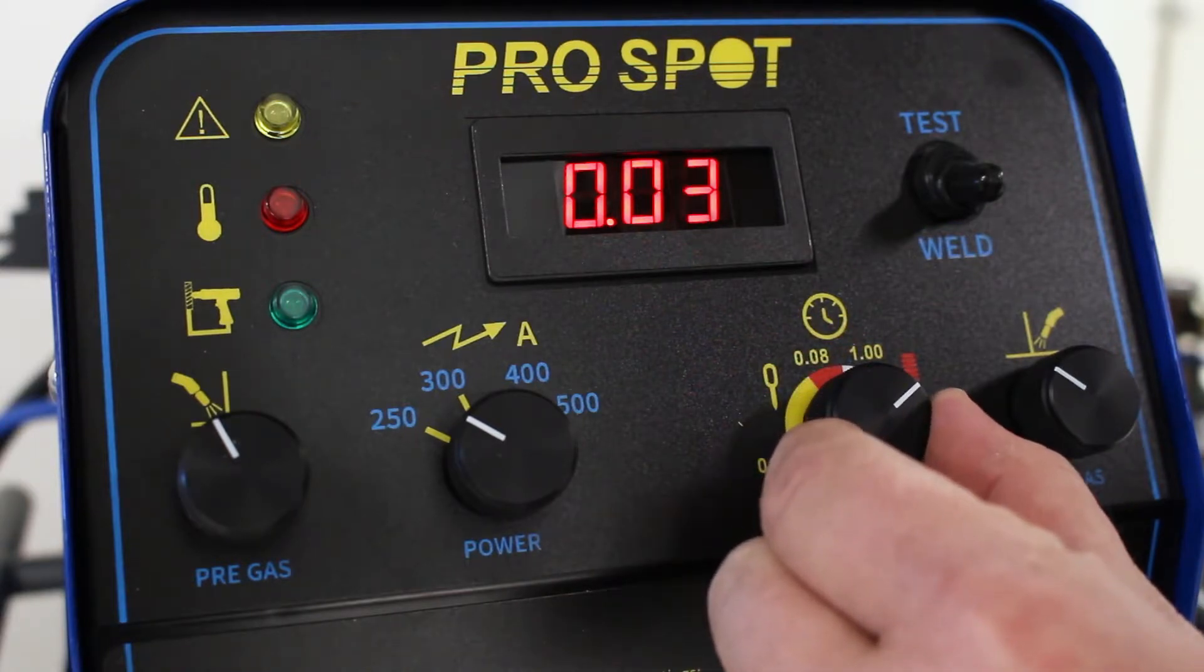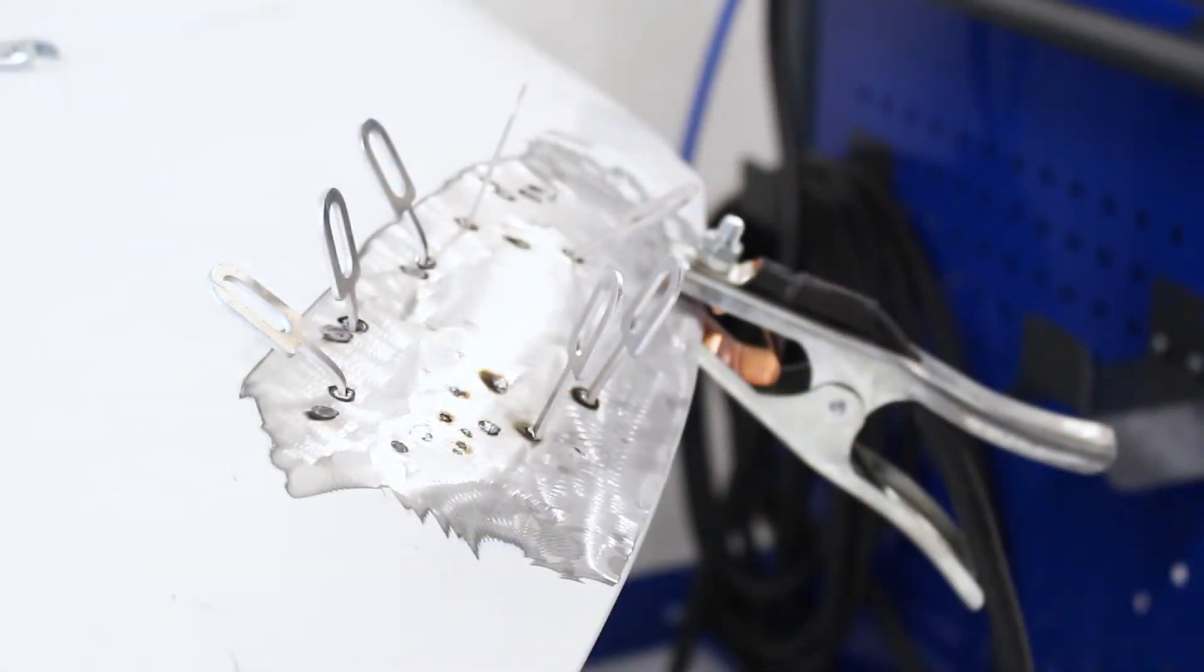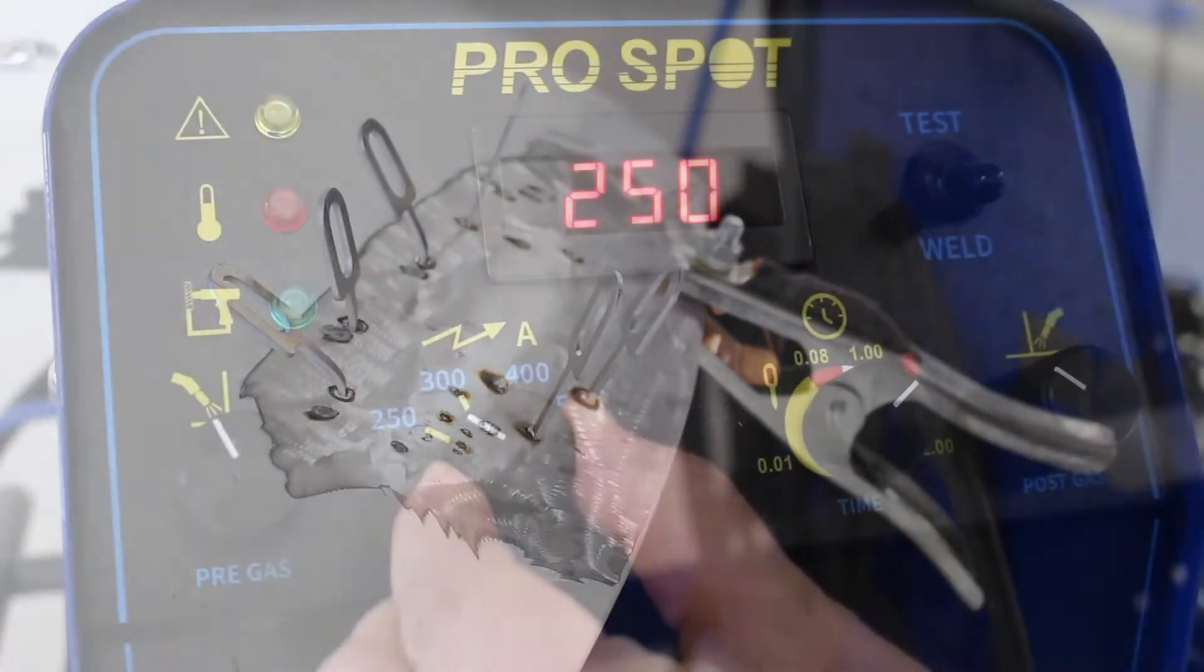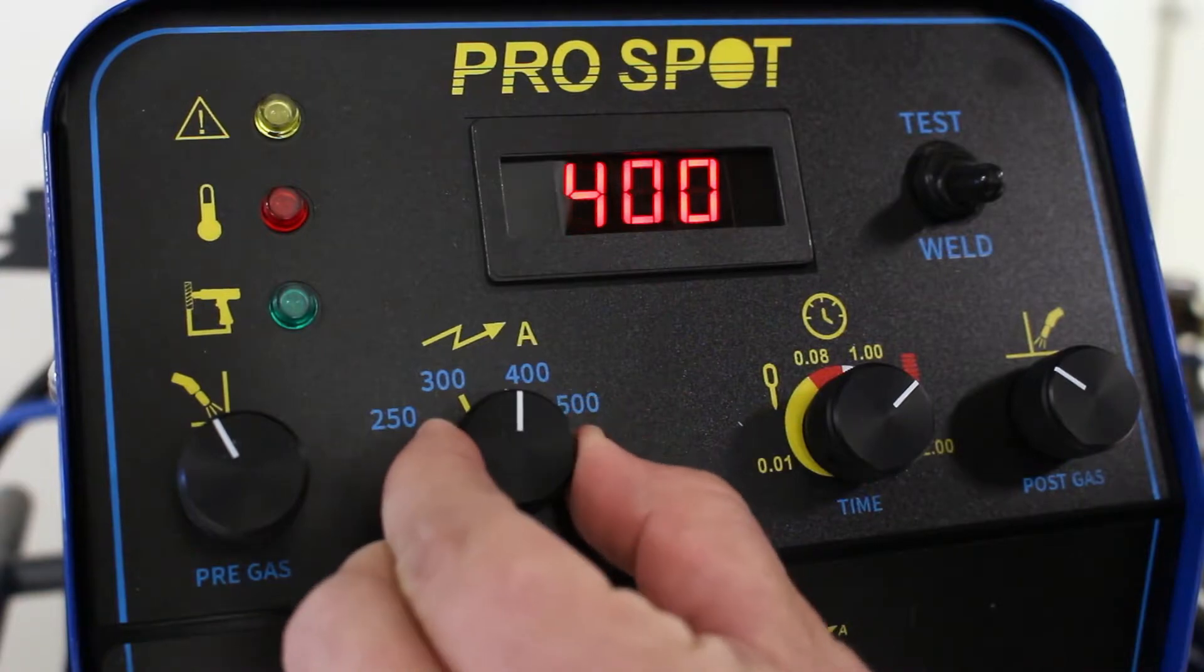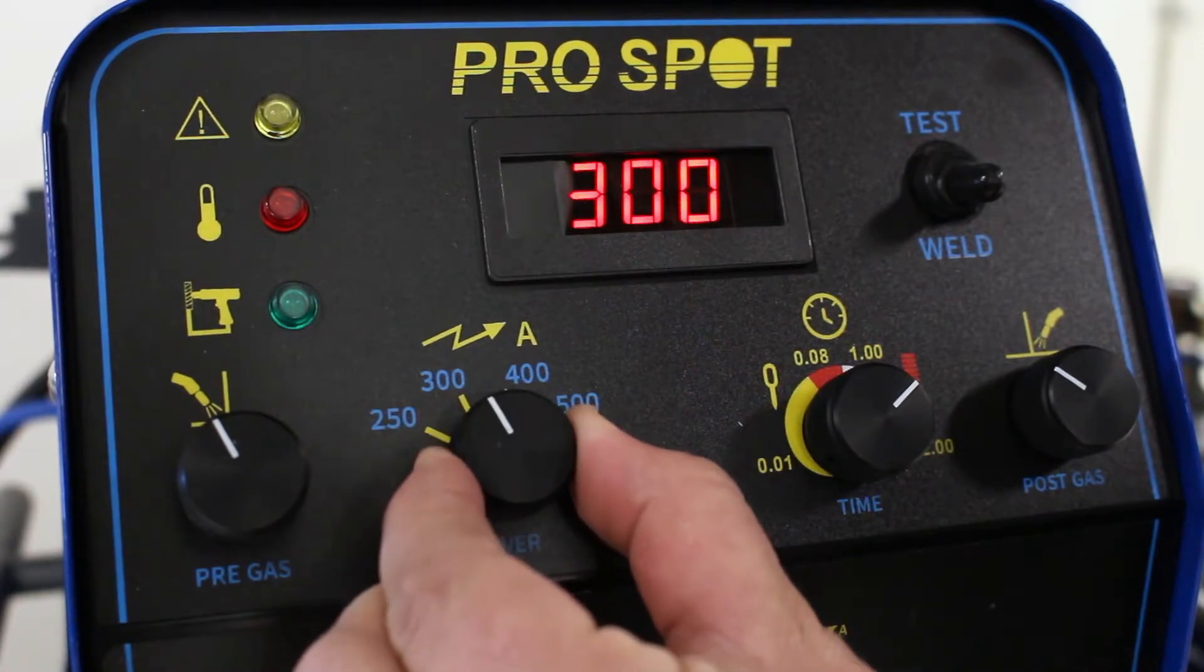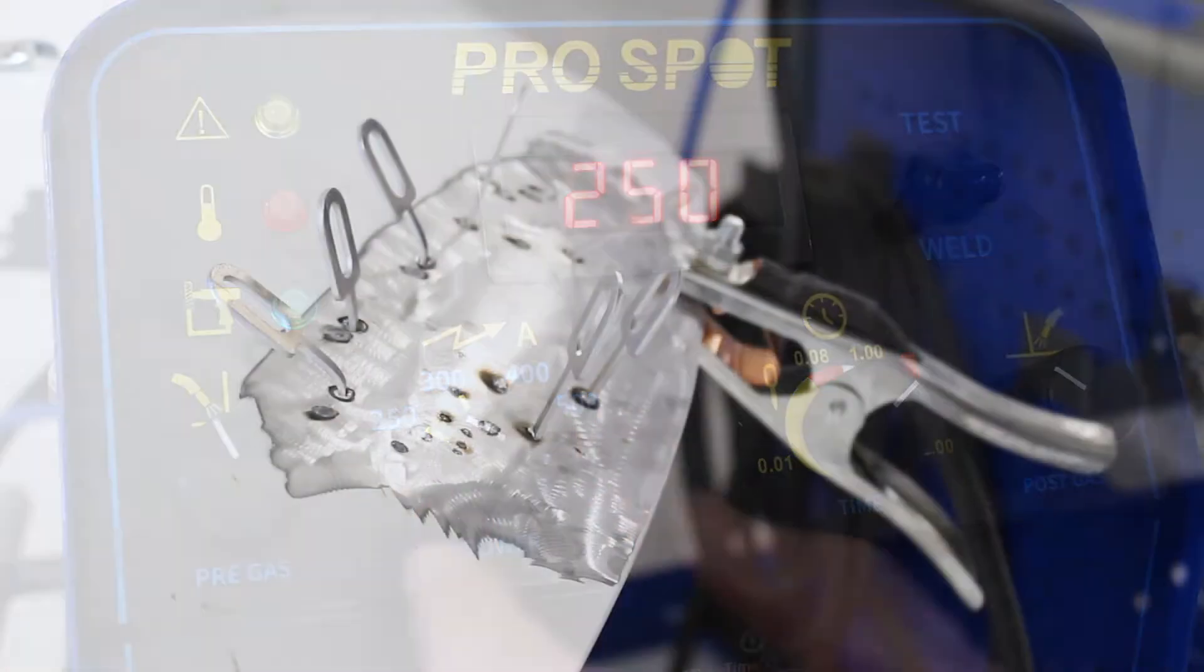And then we also want to take a look at the power. If the power is on 300 or 400, we might want to turn it down to 250, or if you're on 400 go down to 300 and give it a try to see if that gives you less penetration.